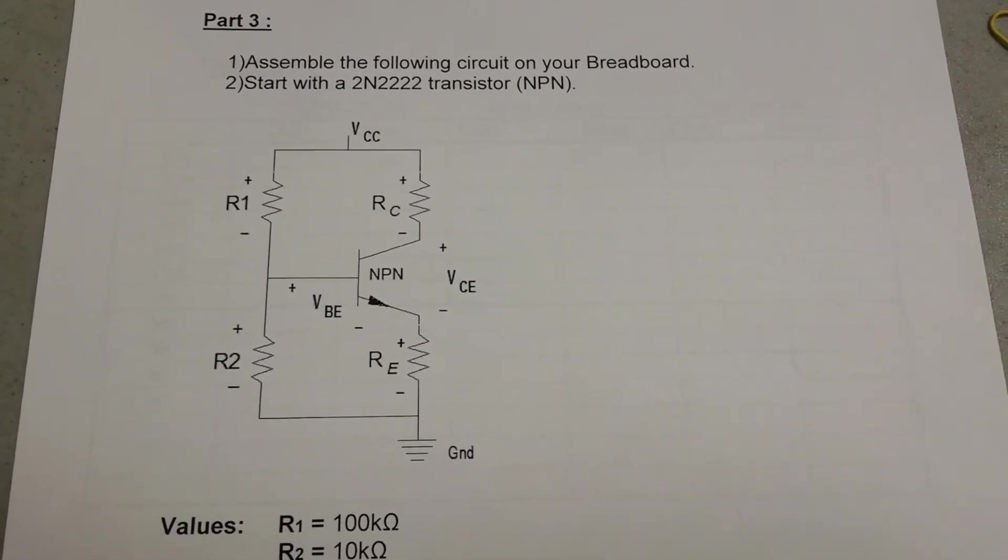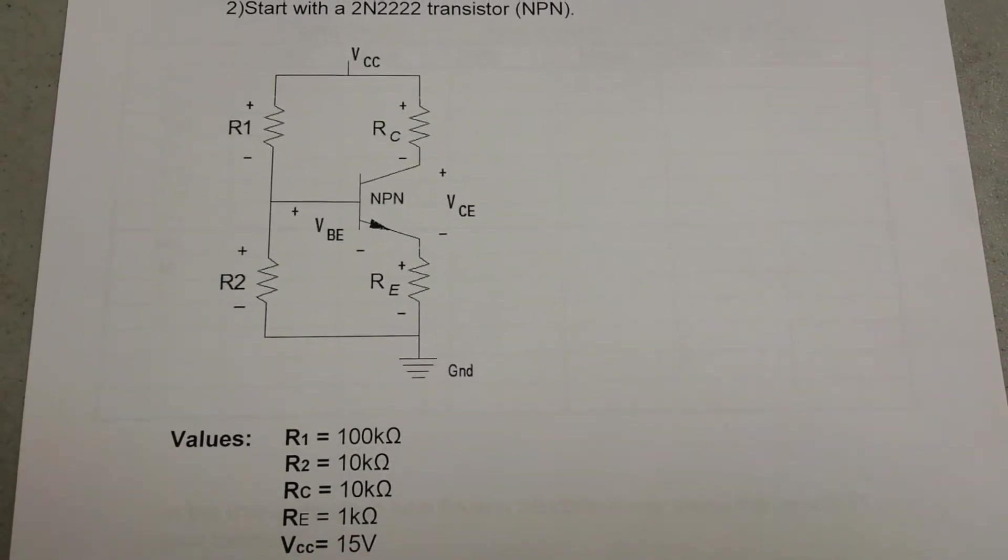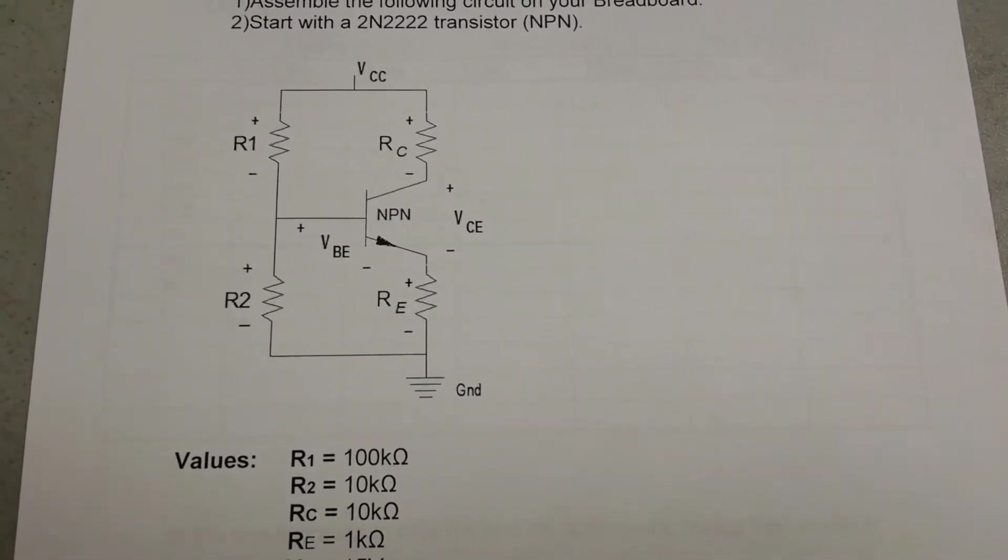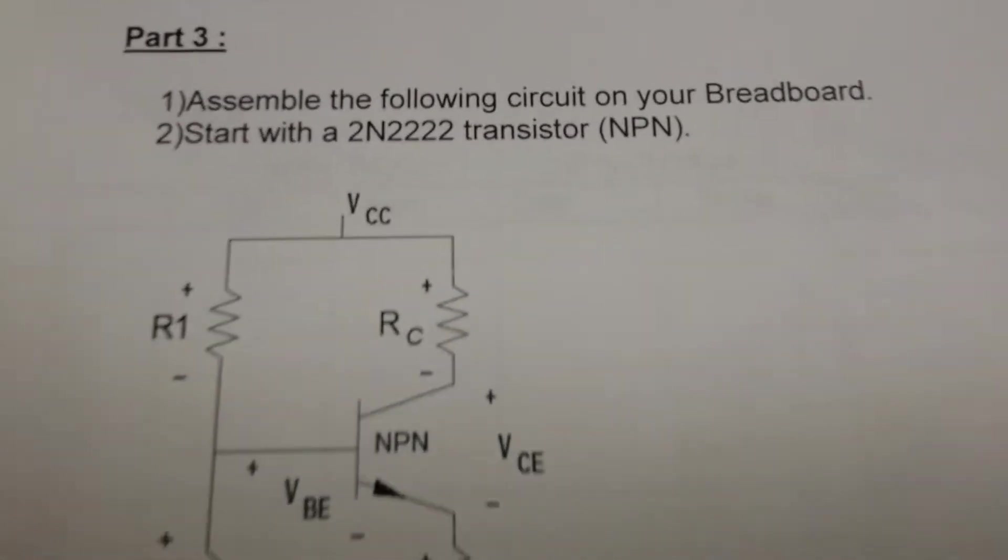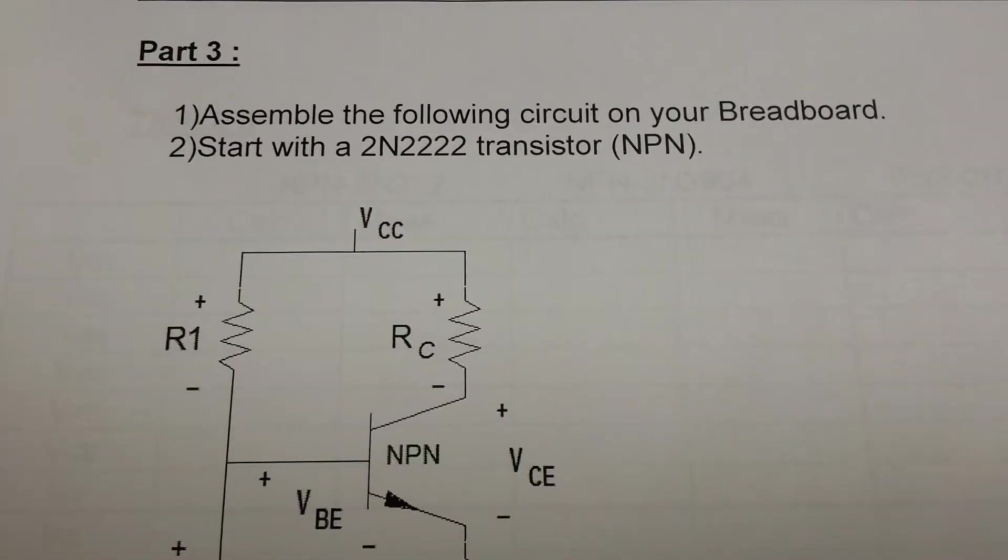So initially what you should do is just get the resistors needed, the four resistor values, and in this case here a 2N2222 transistor from your kit.